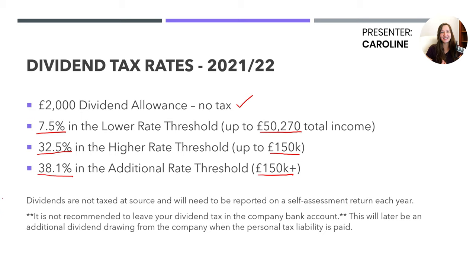Dividends are not taxed at source and will need to be reported on a self-assessment return each year. If you've been receiving dividends and haven't applied for self-assessment yet, you'll likely need to do so. It's definitely not recommended to leave your dividend tax in the company bank account. We always recommend taking the dividends first, then calculating the tax personally, and setting that tax money aside in a personal bank account.